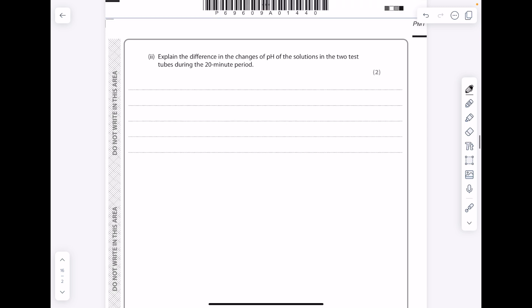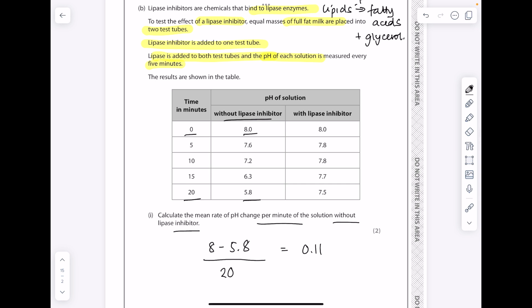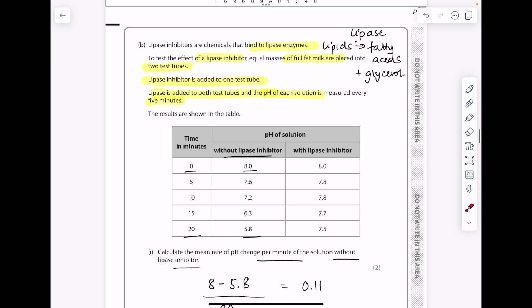Explain the difference in the changes of pH of the solutions in the two test tubes during the 20 minute period. Changes in pH - remember pH relates to how acidic or alkali something is. As we look at the data without the lipase inhibitor, so that's when the lipase is working normally, we see a drop in pH from 8 to 5.8, whereas with the lipase inhibitor the pH remains fairly constant. What could account for this drop in pH? Well I've already written that lipase digests lipids into fatty acids and glycerol.